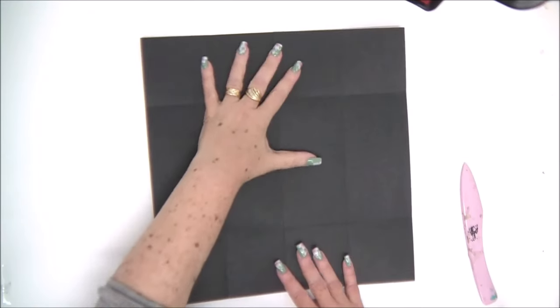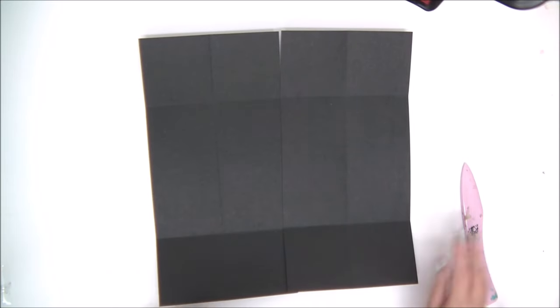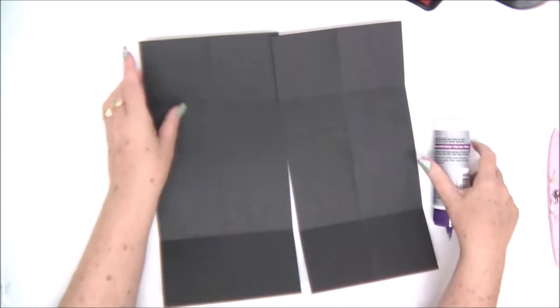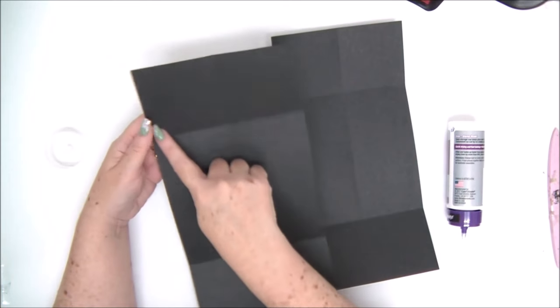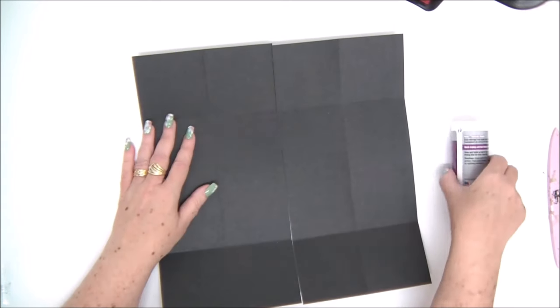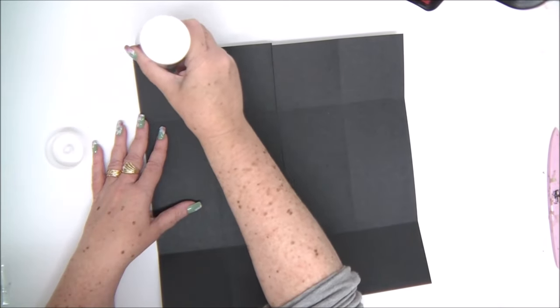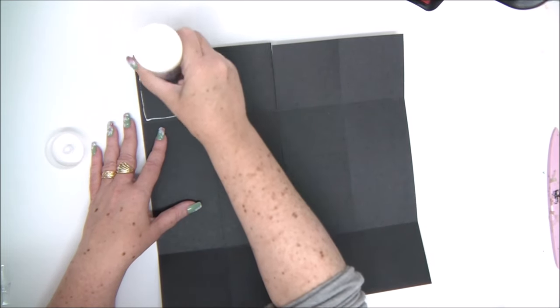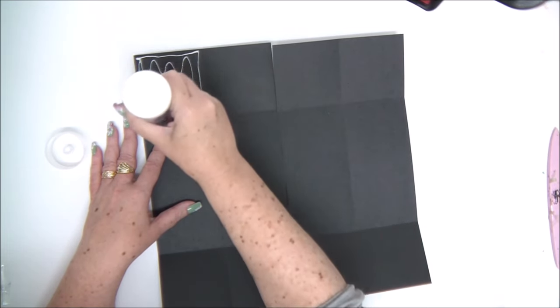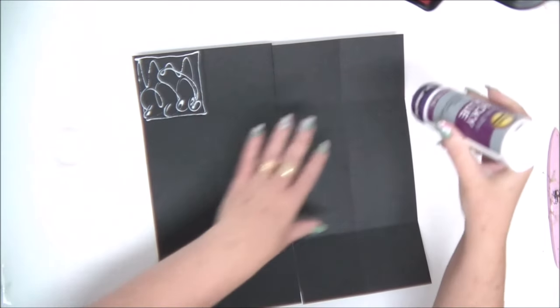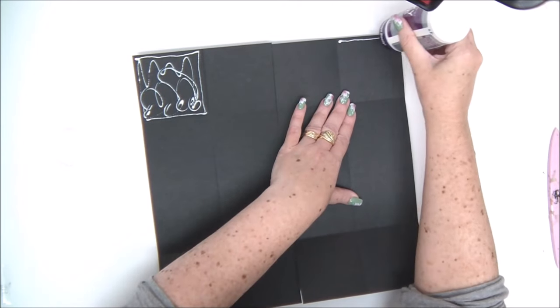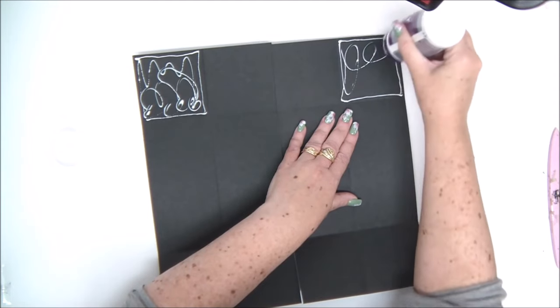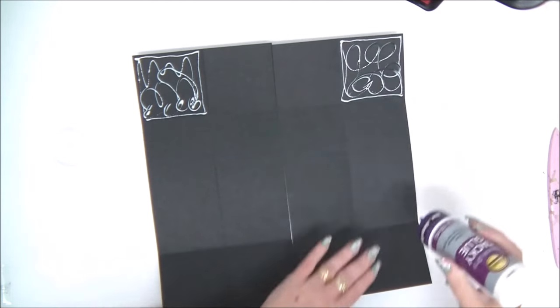Then we're going to apply glue to all four corners, all four squares in the corners. Make sure that you apply the glue on all the surface, but not on the score lines. Because if we have glue on the score lines, we won't be able to fold the card later.